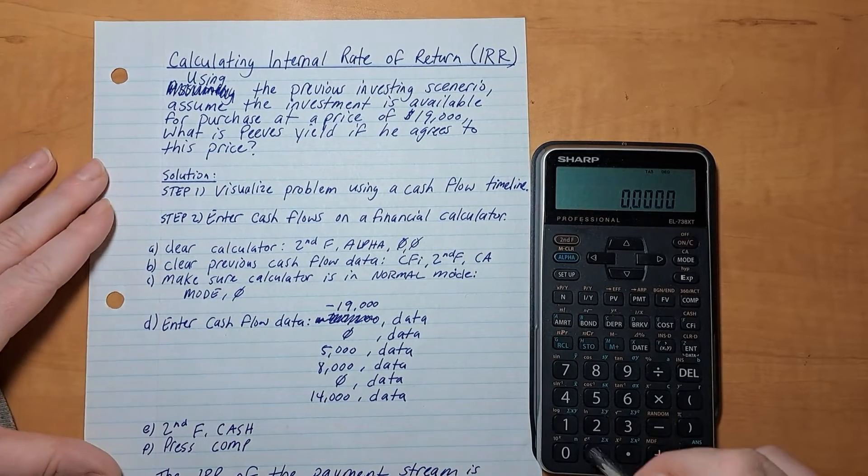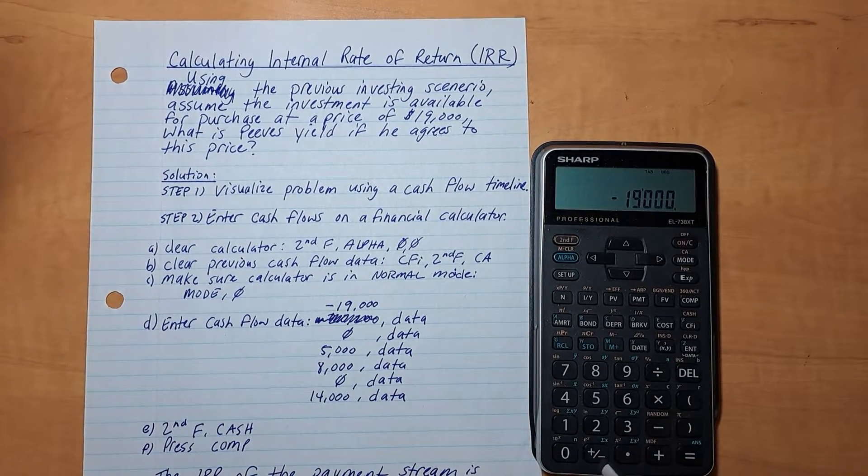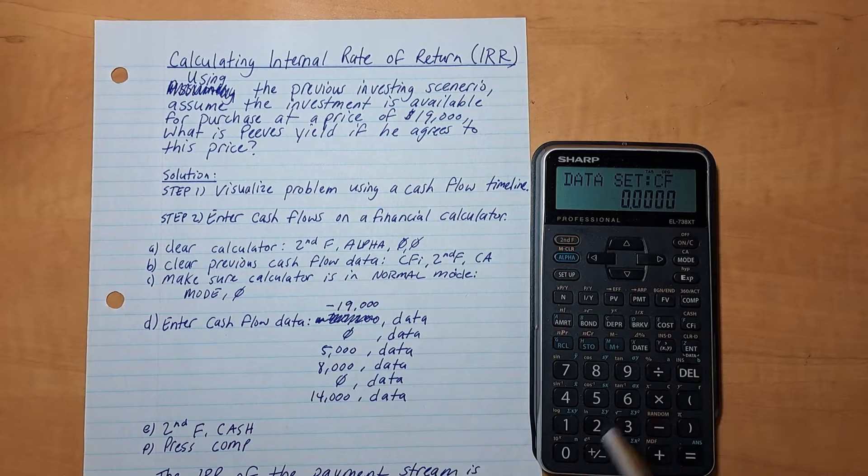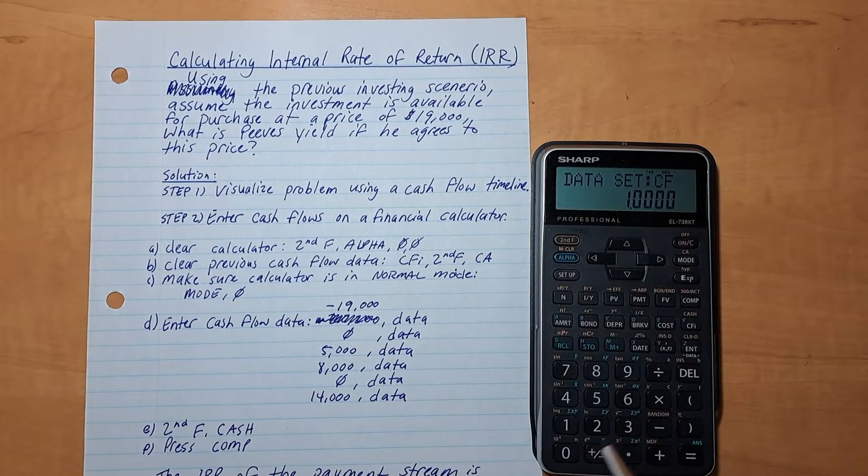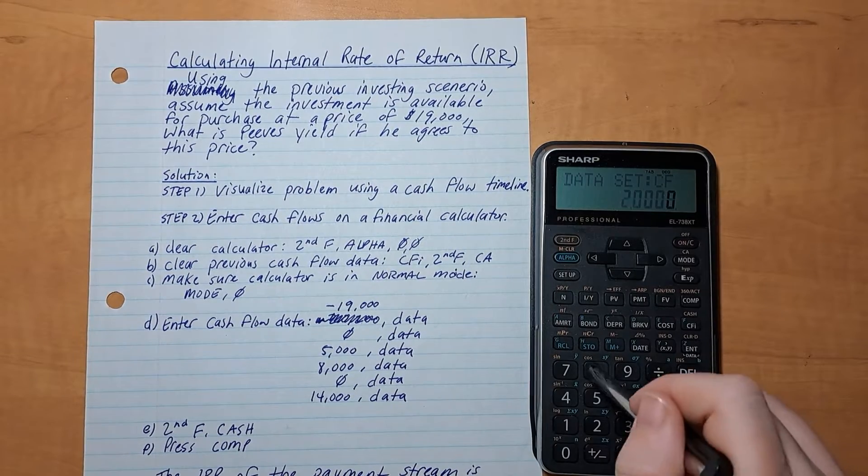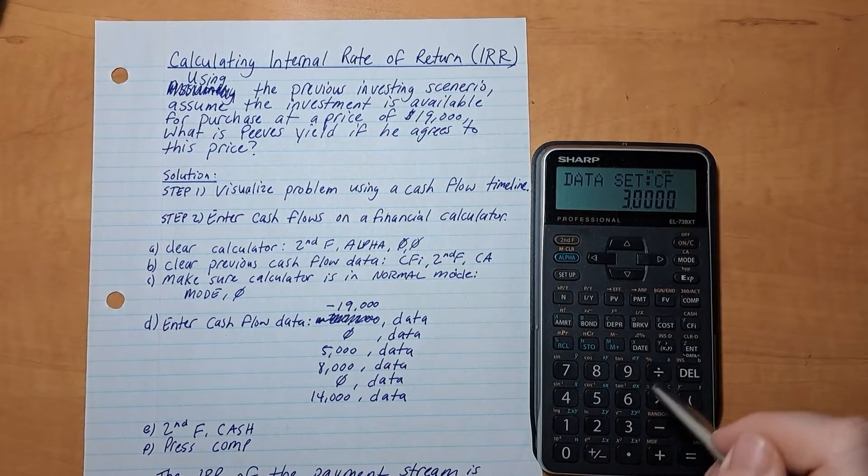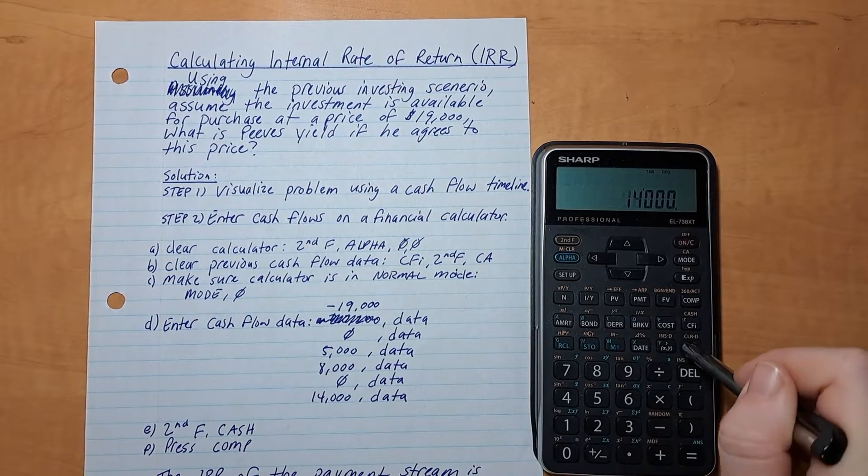So plus minus 19,000, and data. Zero data. Five thousand data. Eight thousand data. Zero data. Fourteen thousand data.